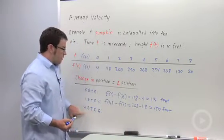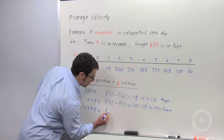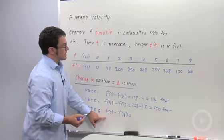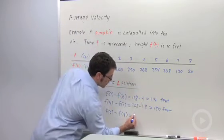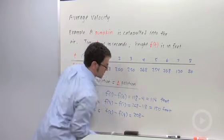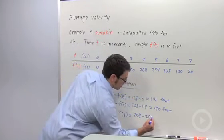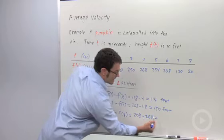And finally, from 4 to 6, you get f of 6 minus f of 4. f of 6, 208. That's the final position. Minus the initial position, f of 4, 268. And you get negative 60.